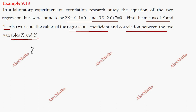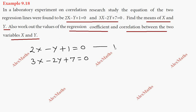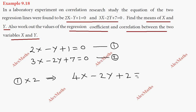The first equation is 2x - y + 1 = 0, and the second equation is 3x - 2y + 7 = 0. We will work with both equations. Multiply the first equation by 2 to get 4x - 2y + 2 = 0. The second equation remains as it is: 3x - 2y + 7 = 0.